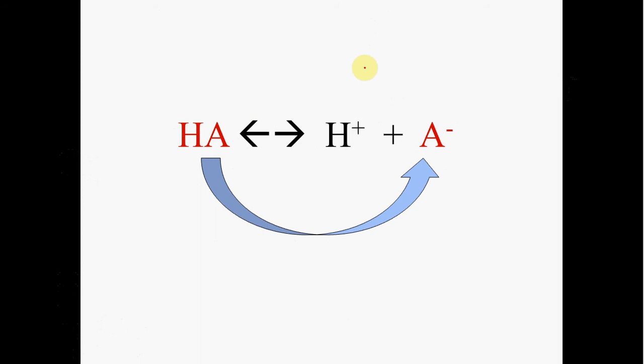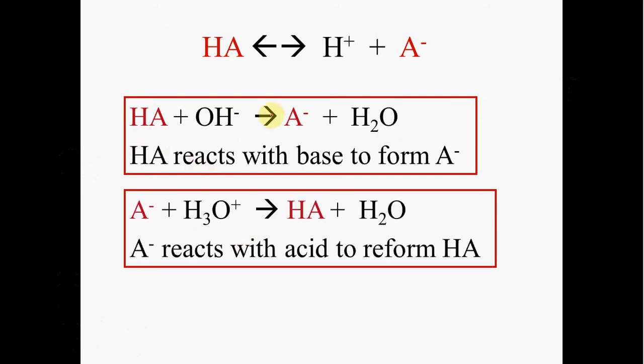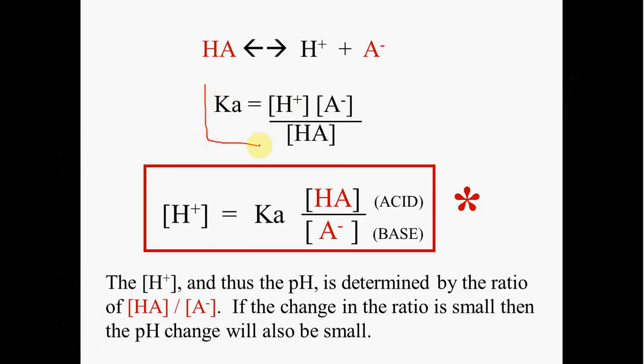When all you're doing is shifting the ratio of weak acid to conjugate base, then all you're doing is changing the amounts of these species. This is our typical Ka expression and we've already shown this useful version of it, which is the hydronium ion is equal to Ka times HA over A negative, always the acid over its conjugate base. So you can see that H plus and Ka are related by the ratio of the HA and the A negative to each other. If the change in the ratio is small, then the pH change will also be quite small.